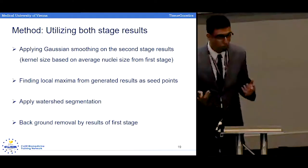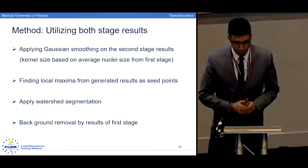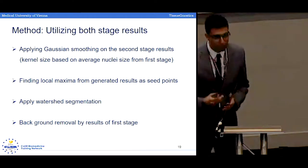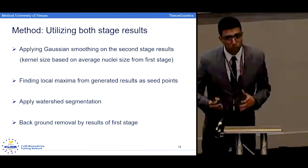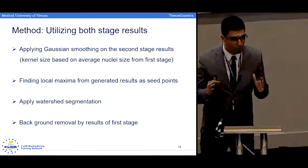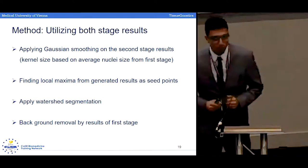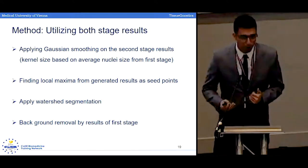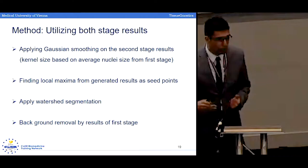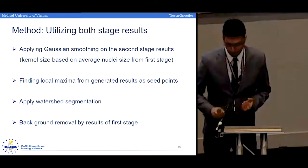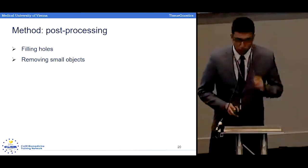After training both models in two sequential steps, we use the results of both to perform our final instance segmentation. First, we apply a Gaussian smoothing filter on the results of the second stage UNet, and the kernel size is determined by the results of the first stage UNet — if we have a bigger average cell size, we apply a Gaussian smoothing filter with a bigger kernel. Then from this modified distance map, we find the local maxima and use them as seed points for the watershed algorithm. For background determination, we use the results of the first stage UNet. We also apply two post-processing steps: filling holes and removing small objects from the segmentation mask.